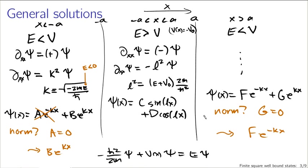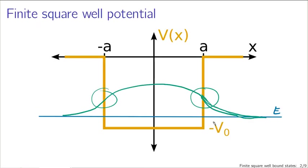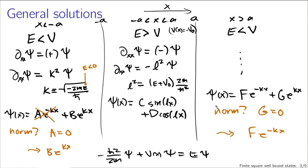The next step requires thinking back to an earlier activity about the time-independent Schrödinger equation for an even potential. Our potential here is very much even: V(x) = V(-x) for all x. One result from that activity was that for an even potential, we can write the wave function as either even or odd. Our unknowns are B, C, D, F, and k.